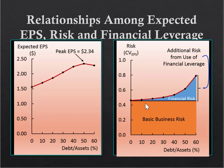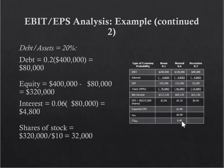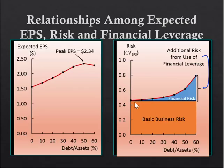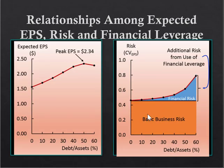If we plot that out with the coefficient of variation, the basic business risk starts at zero debt with a coefficient of variation of 0.46. As you add debt, the financial risk premium adds on top of that baseline business risk, and you can subtract one from the other to arrive at the financial risk component.